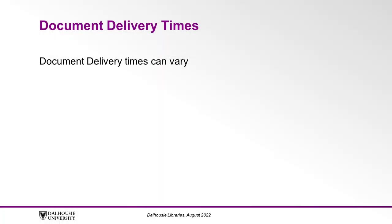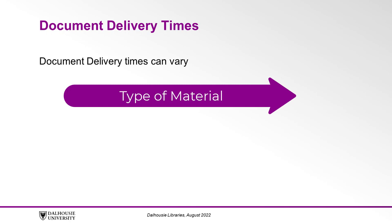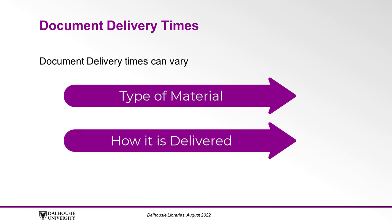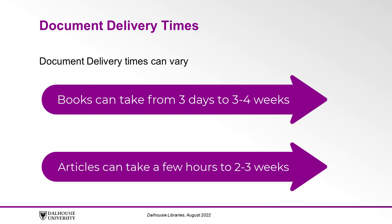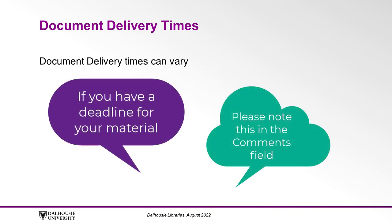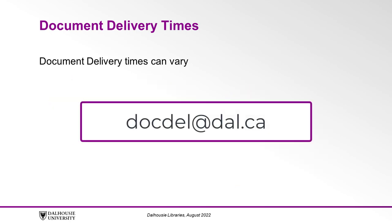Document delivery times can vary depending on the type of material you have requested, how it is delivered to us, and the location of the supplier. Books can take from three days to three to four weeks to arrive. Articles can take a few hours to two to three weeks to arrive. If you have a deadline for your material, please note this in the comments field when you submit your request. You can also email the staff at docdel at dal.ca, and they can check where the item is coming from and give you an estimated arrival time.